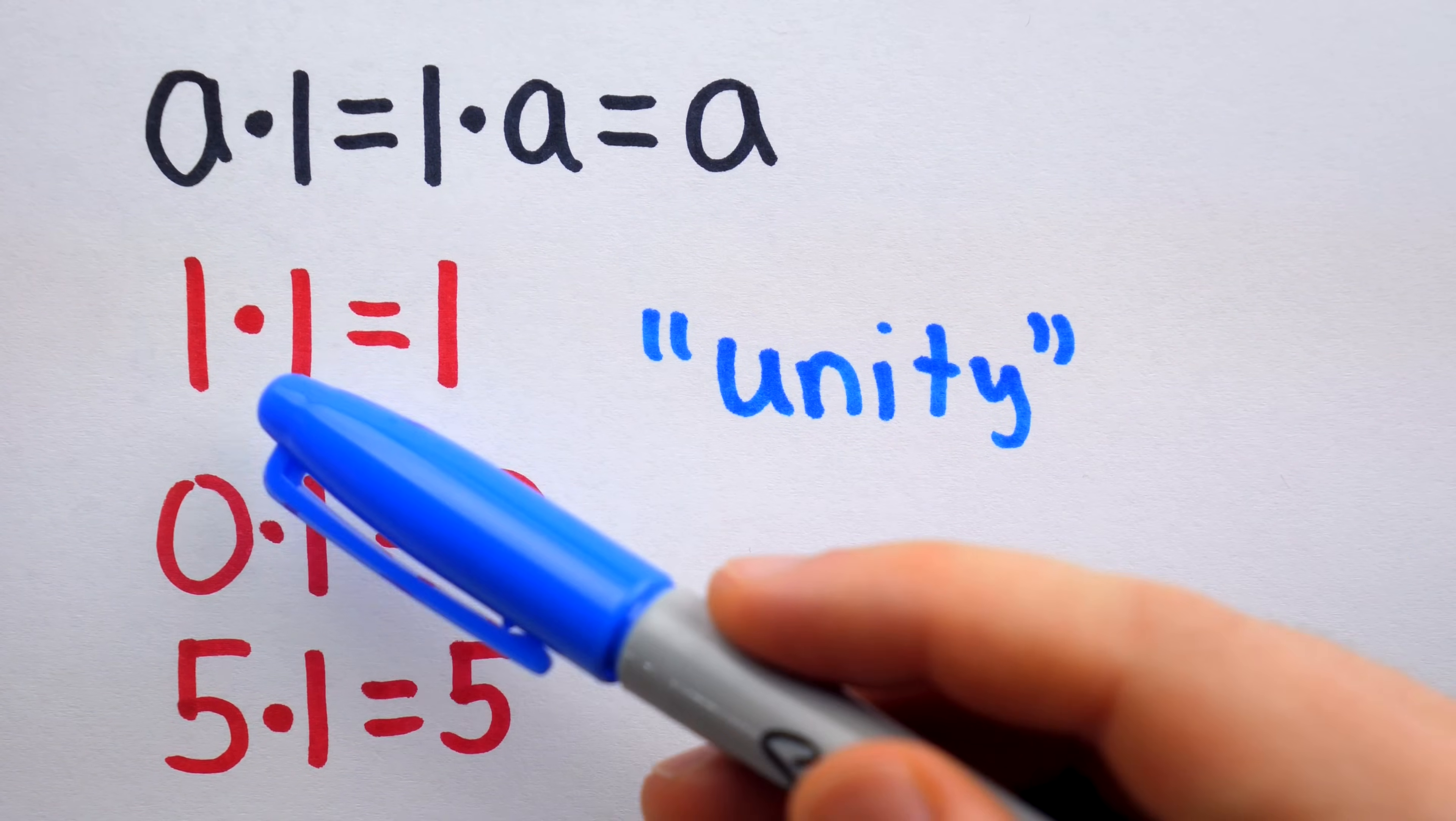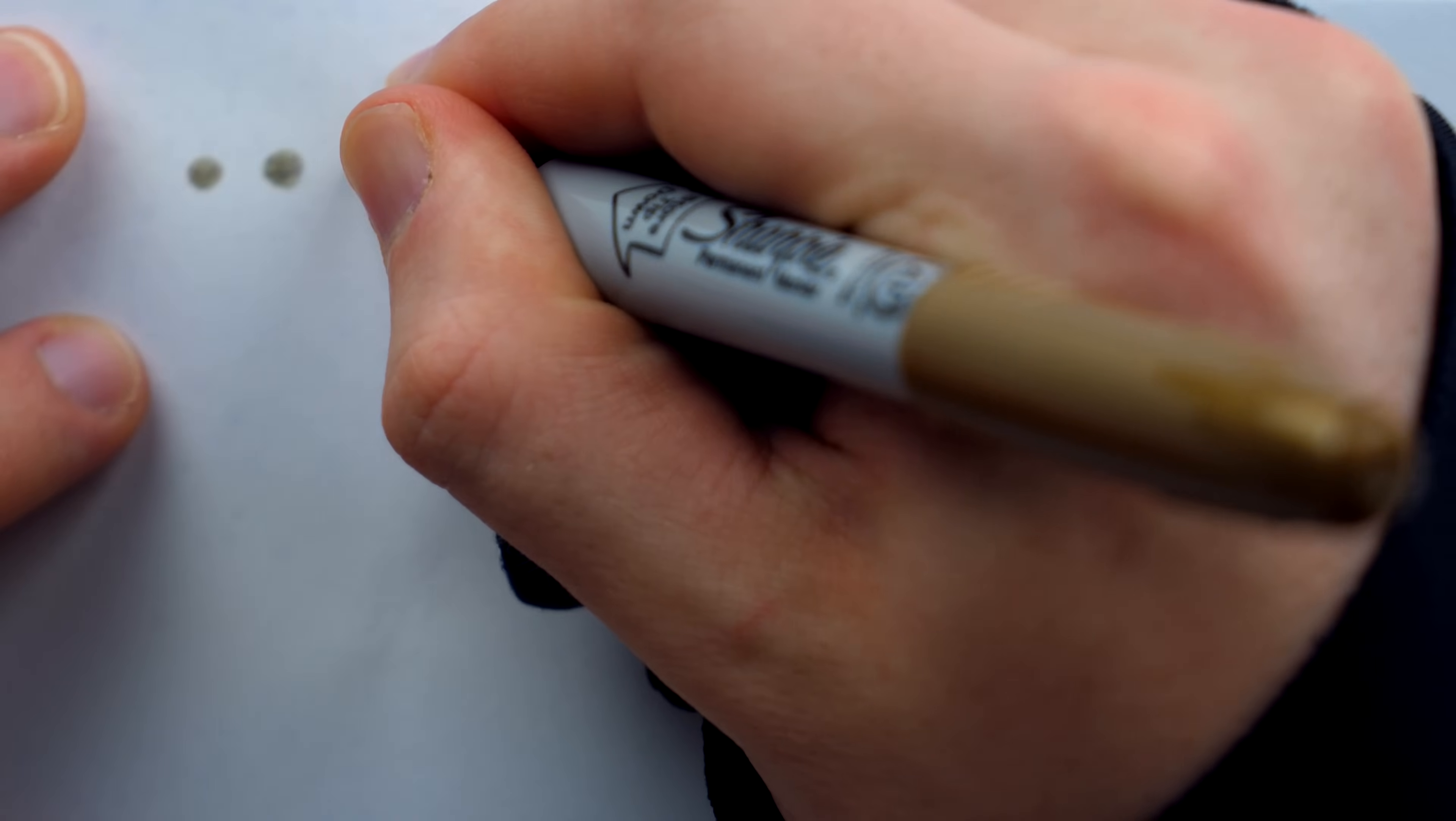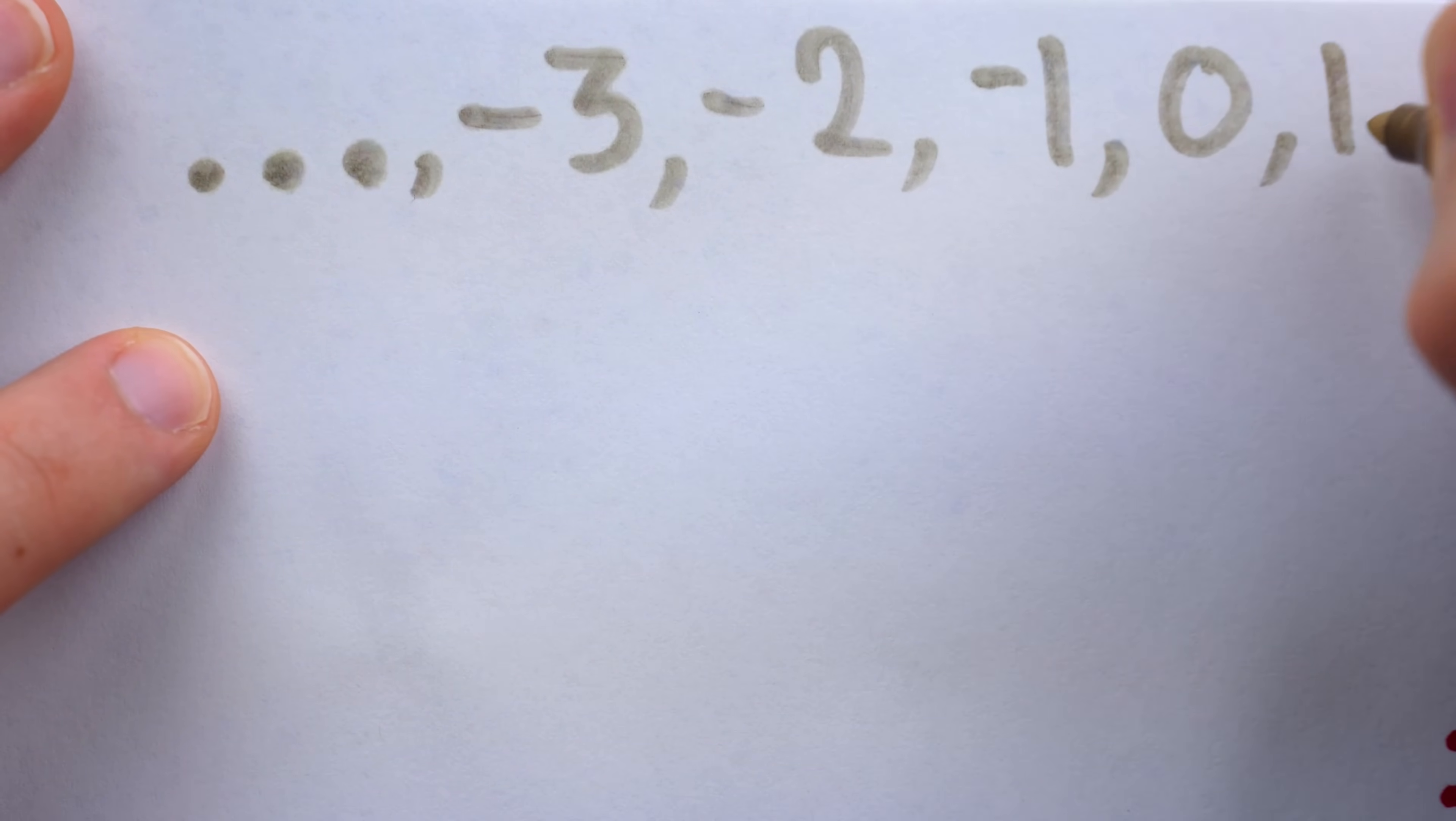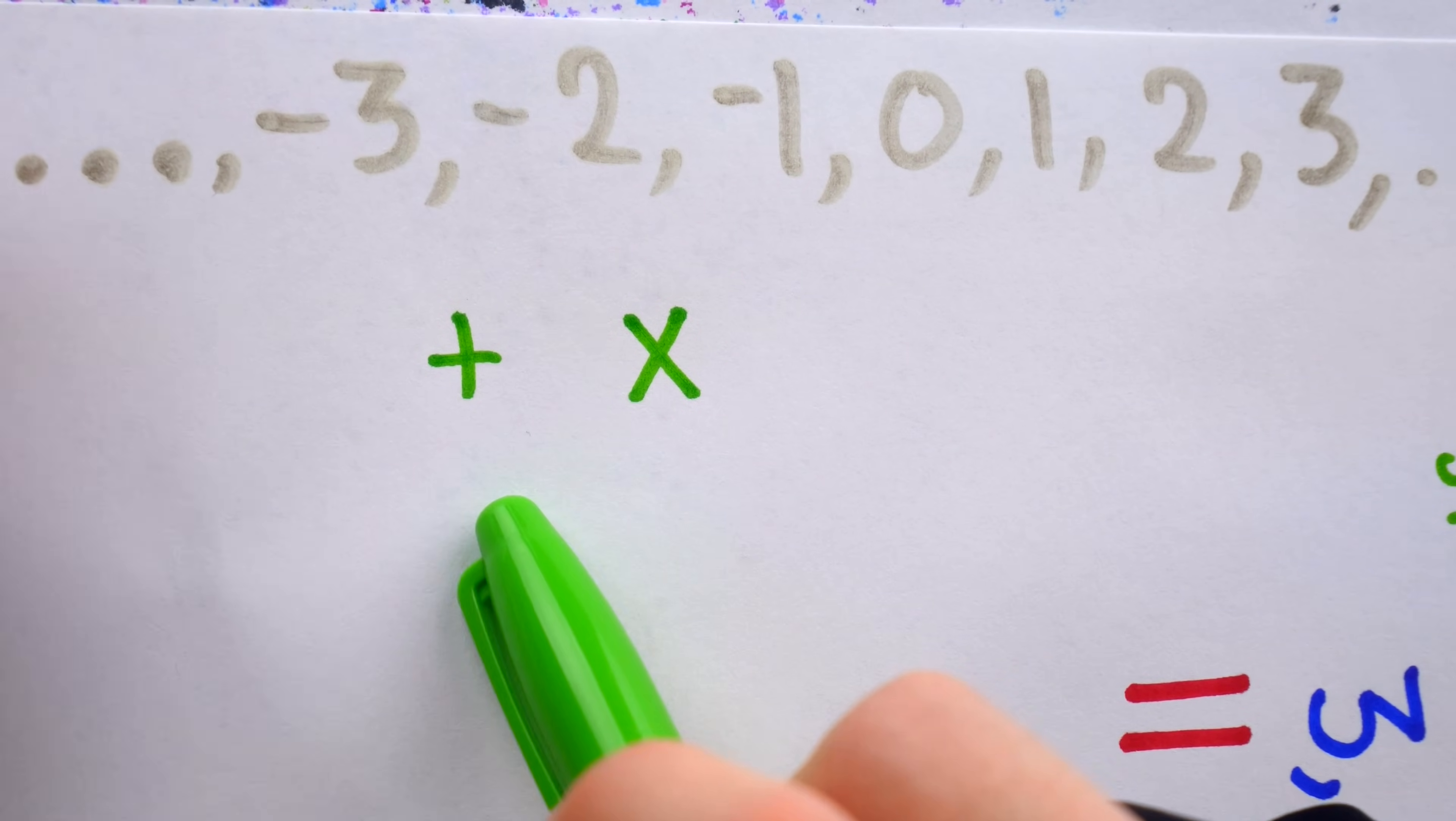Now, you may think, one is the only number that has this property, so why on earth would we need such a special term to refer to it? Well, you mustn't take our beloved lonely number for granted. I'm sure we are all familiar with doing mathematics with the integers. These are the numbers with no fractional part, like negative three, negative two, negative one, zero, one, two, three, and so on. Doing addition and multiplication with the integers is a very pleasant thing.